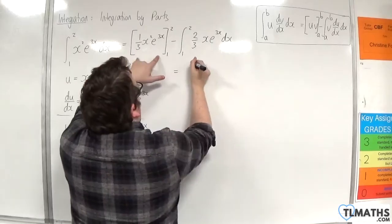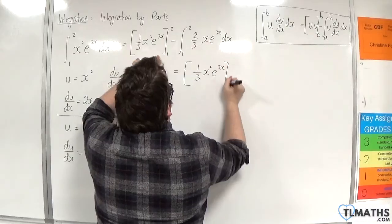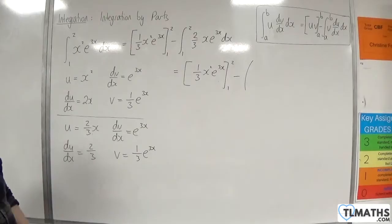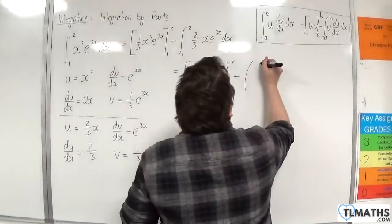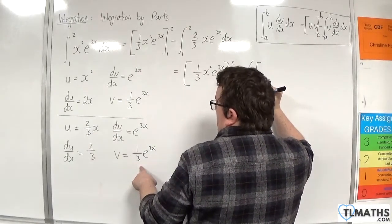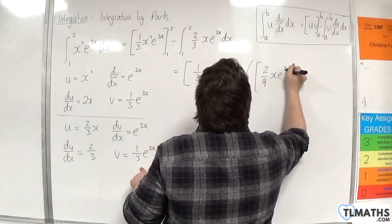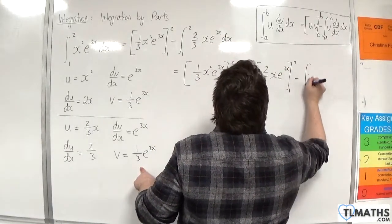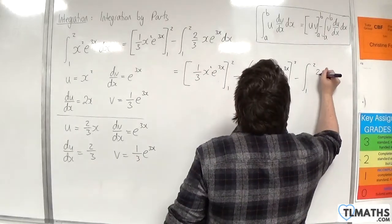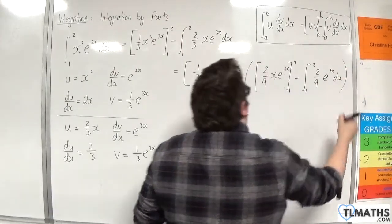I'm not going to evaluate the square bracket just yet — I'll leave it as it is. Take away, and open up a large bracket. Inside the bracket we have u times v, so 2 thirds x times 1 third e to the 3x, giving 2 ninths x e to the 3x, evaluated between 1 and 2, take away the integral between 1 and 2 of v times du by dx, which is 2 ninths e to the 3x dx. Close the bracket.